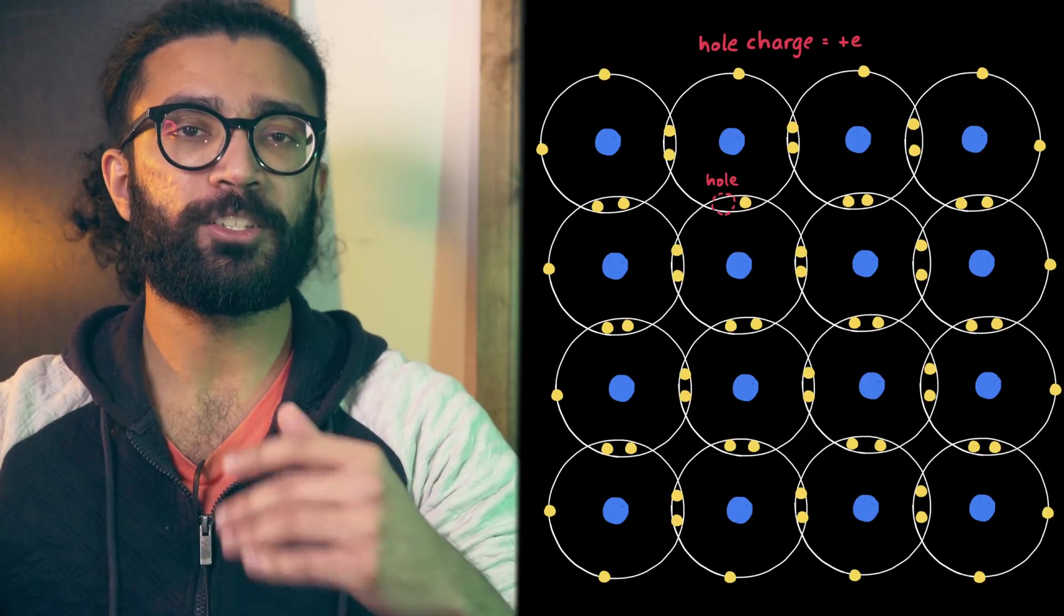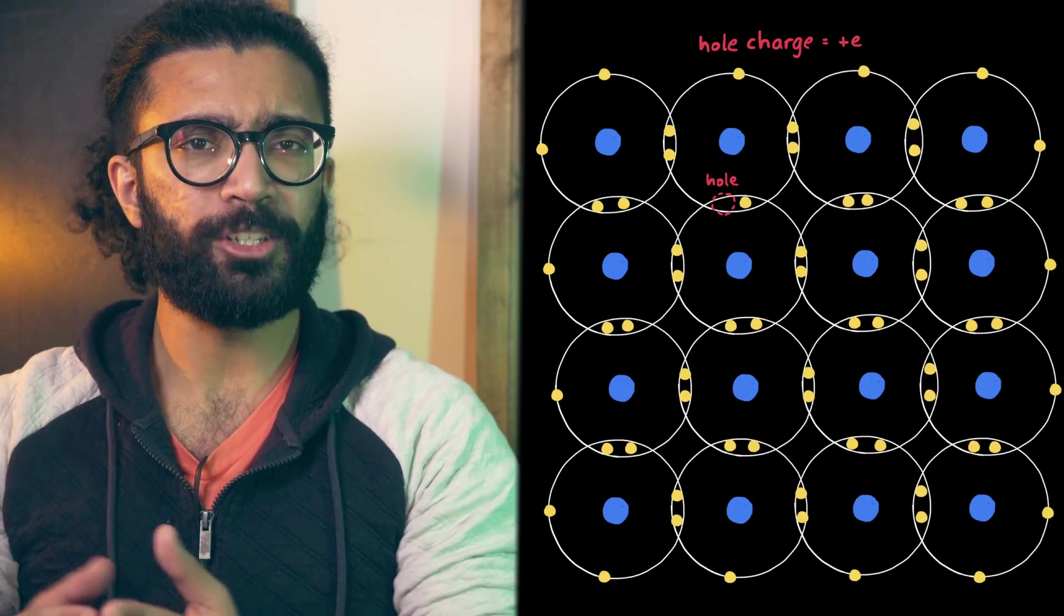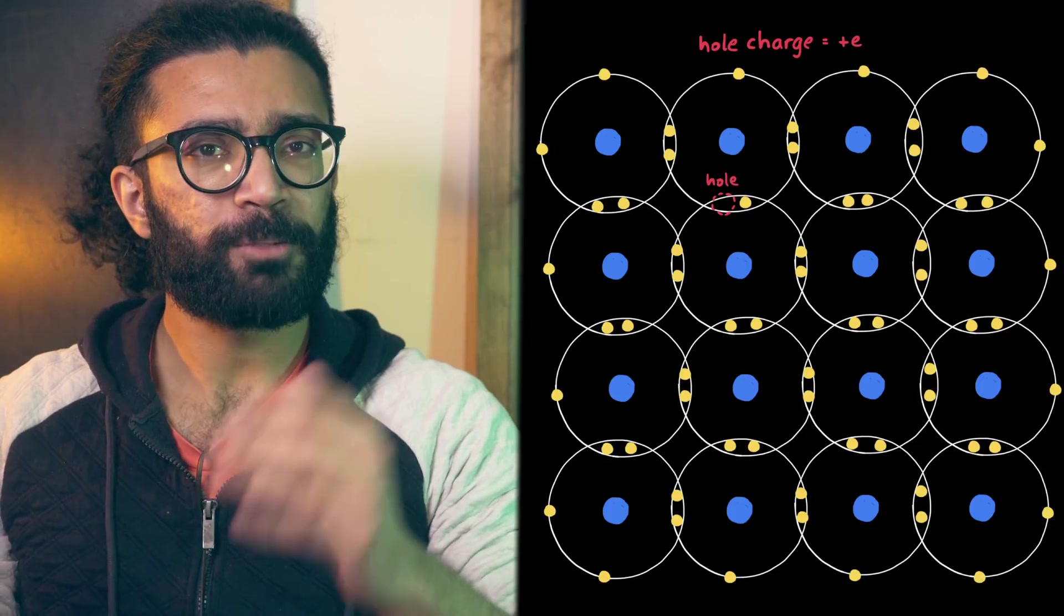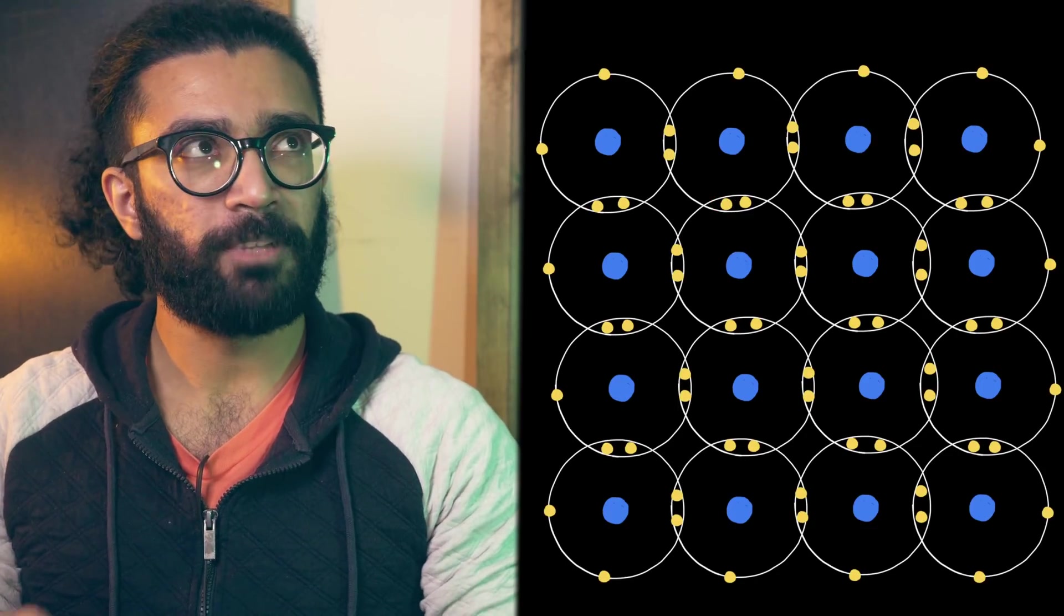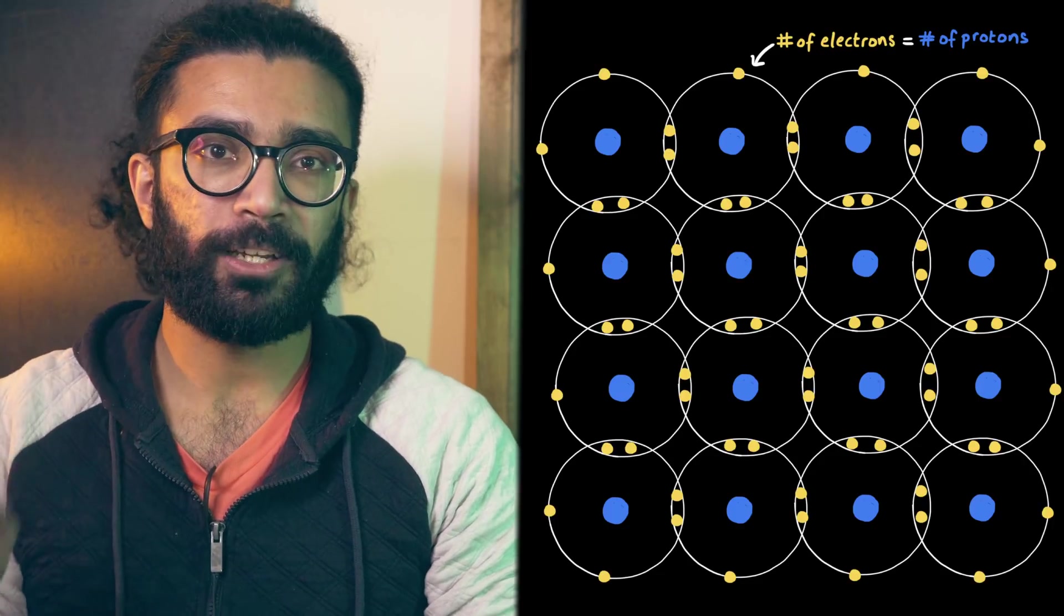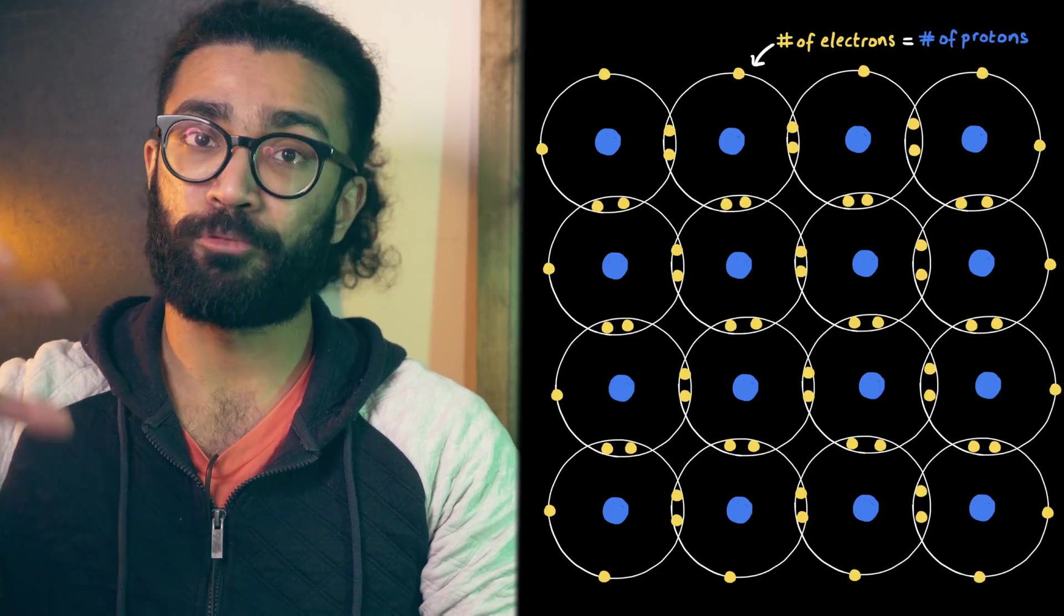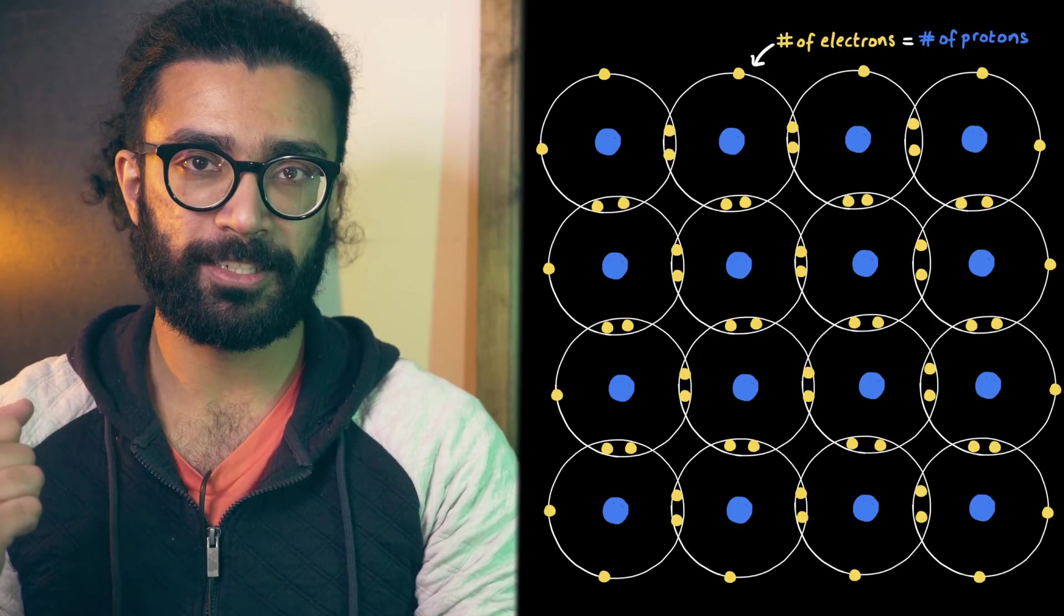But the real reason is a bit more complicated than this. Technically, if a hole is where an electron could be, but isn't, then the hole should be neutral, since there's nothing there, right? But before the electron was given enough energy to leave behind a hole, the number of electrons in this region of space balanced out the number of protons in the nuclei of each one of these atoms.